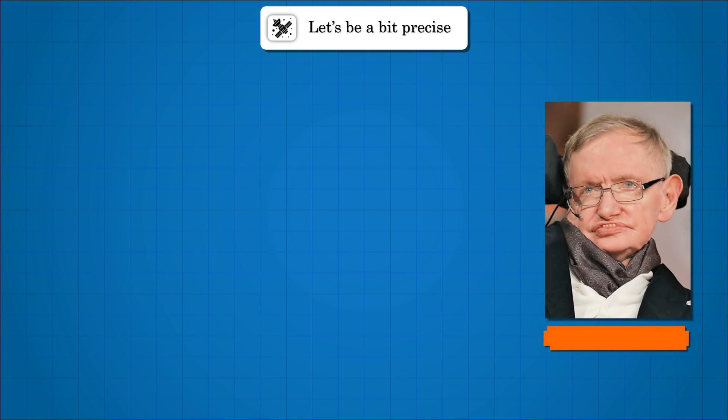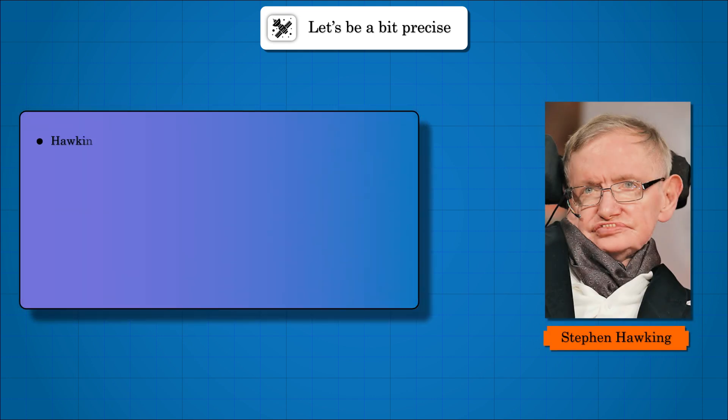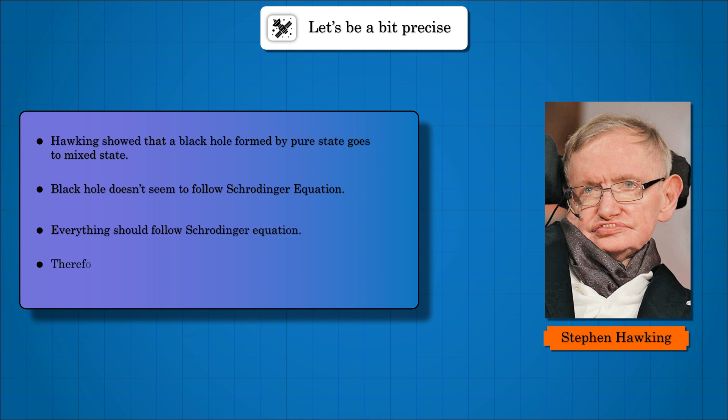Hawking showed that even if we start with a pure state, we end with mixed states at the end of black hole evaporation. This contradiction suggests that the Schrödinger equation might not describe black hole evolution, presenting us with a paradox.